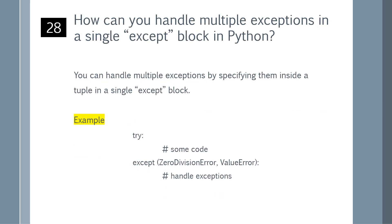How can you handle multiple exceptions in a single except block in Python? You can handle multiple exceptions by specifying them inside a tuple in a single except block. You can refer to the example shown on the screen.